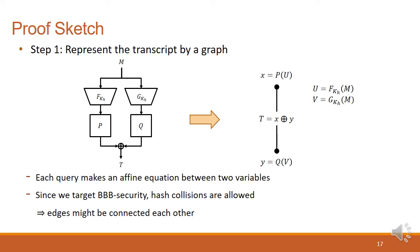Let us start to see the proof steps. For the first step, we represent the transcript by a graph. As you can see in the figure, each query, u, v, and t, is mapped into the edge which connects the vertices x and y. The vertex x represents the P of u, and the vertex y represents the Q of v. Also, the edge has its label, t, to represent the XOR of x and y. Since each query makes an affine equation between two variables P of u and Q of v, the transcript graph can be viewed as another representation of a system of affine equations made by adversary's queries. Note that since we target beyond birthday-bound security, there exist hash collisions of messages, so the edges might be connected to each other.